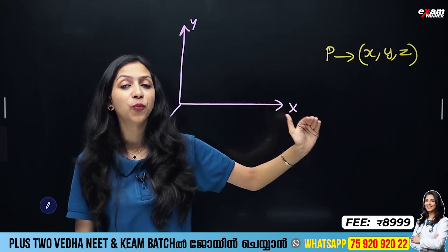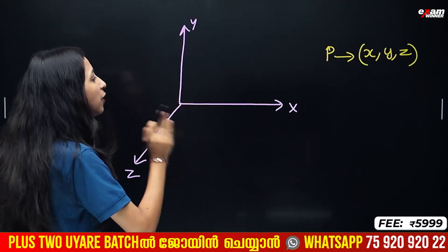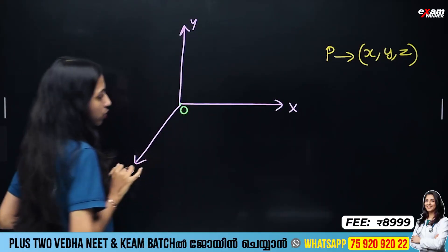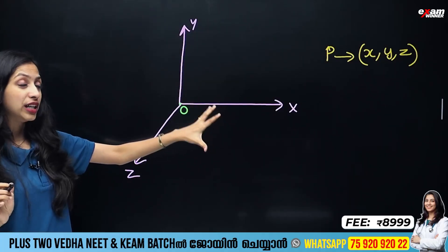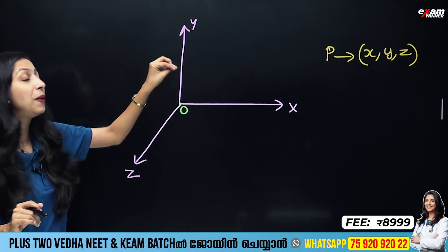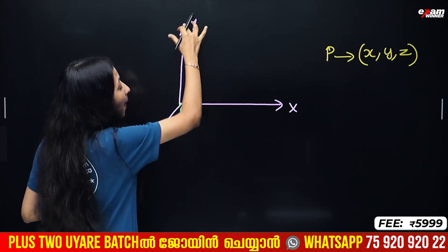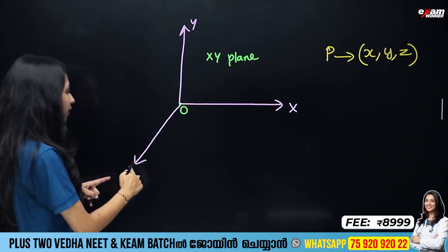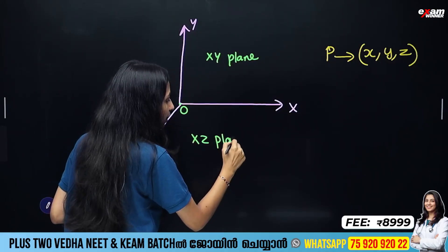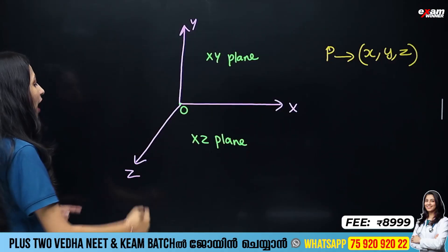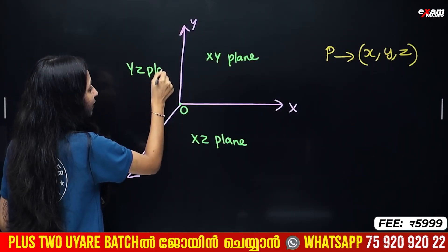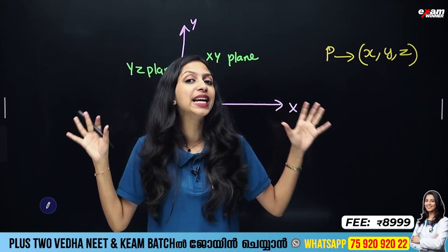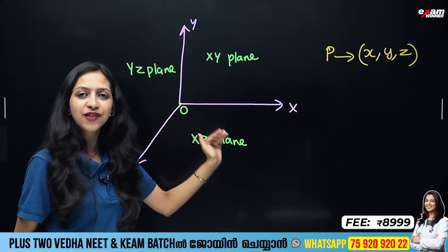These three axes — X, Y, and Z — divide space into regions. Together, they form three planes: the XY plane, the XZ plane, and the YZ plane. These three planes intersect and create the divisions of space we will study.